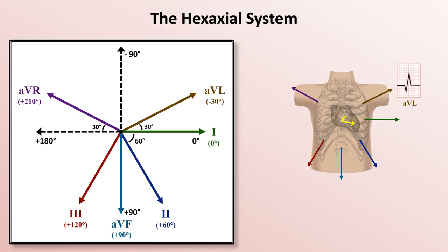The second depolarization event is of a sort of similar direction as AVL, so therefore AVL will record a later positive deflection, the amplitude of which is similarly influenced by both the angle and magnitude of the depolarization vector.